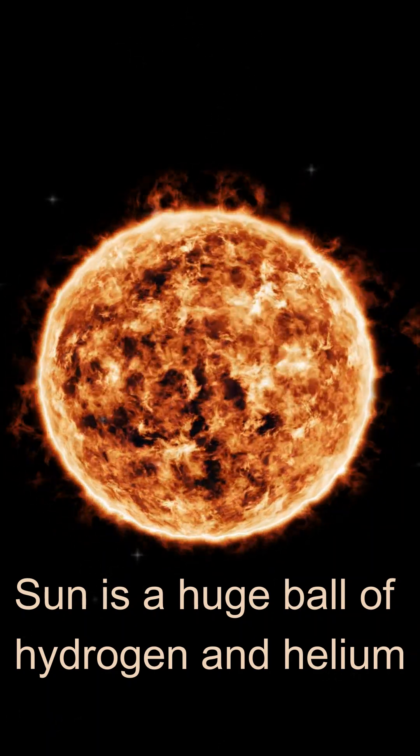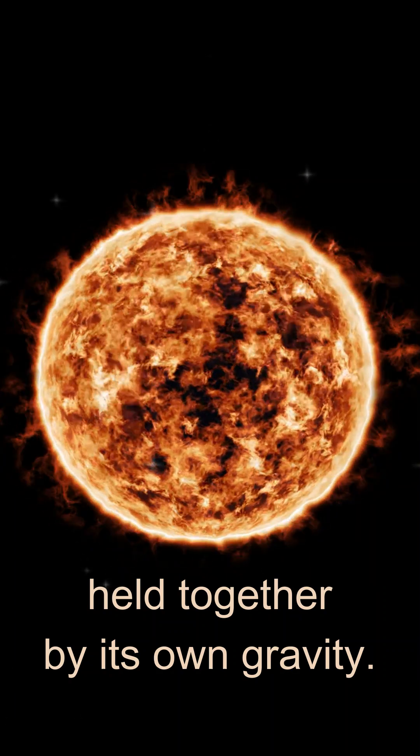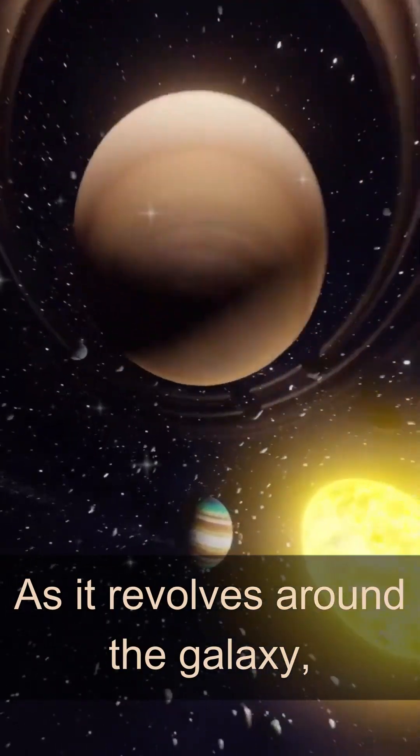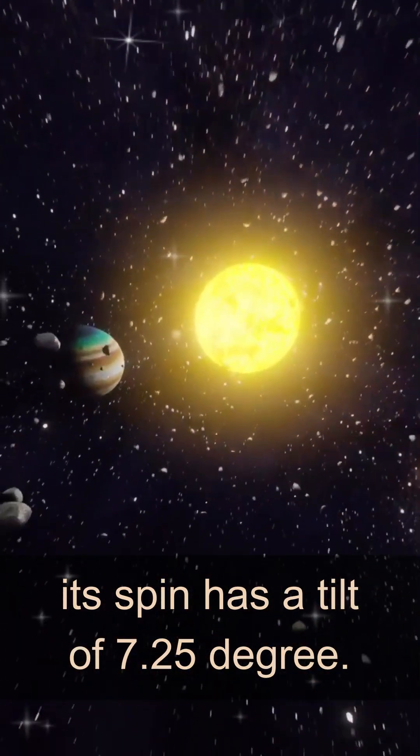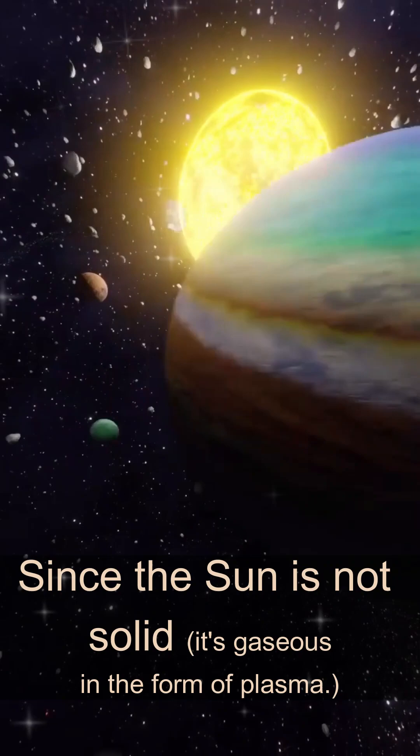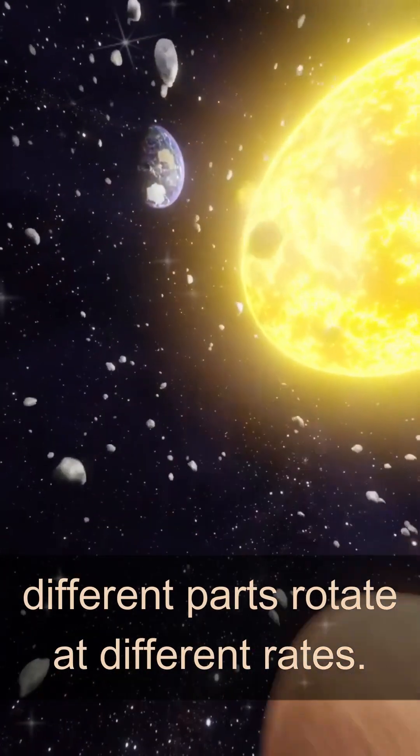The sun is a huge ball of hydrogen and helium held together by its own gravity. The sun rotates on its axis as it revolves around the galaxy. Its spin has a tilt of 7.25 degrees. Since the sun is not solid, different parts rotate at different rates.